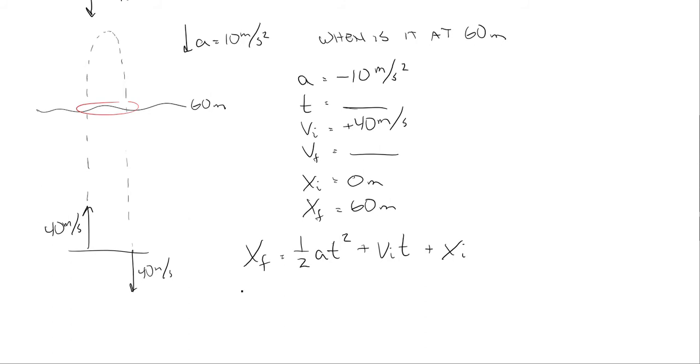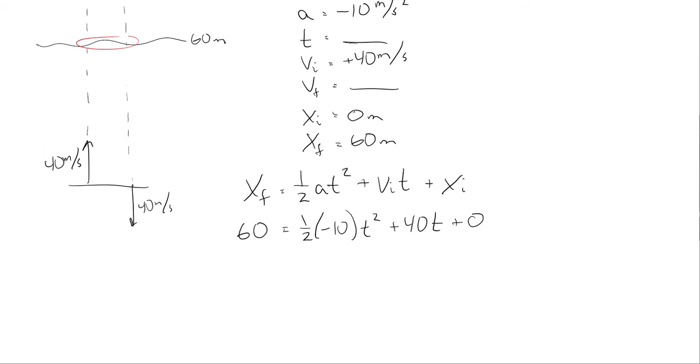And when I plug in, I get 60 is equal to 1 half of A, 1 half of negative 10 T squared plus V initial, which is 40 times T plus 0. And now we have a quadratic equation. And we need to solve this. So I'm going to simplify.